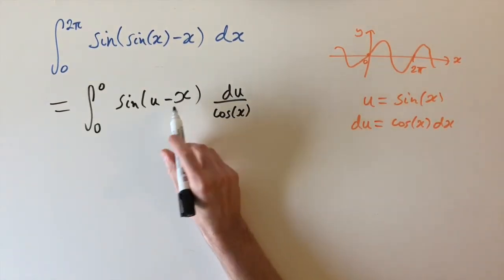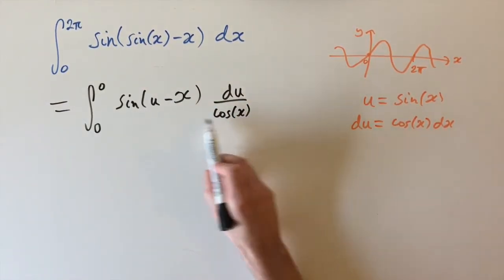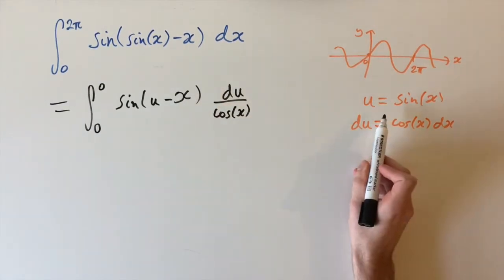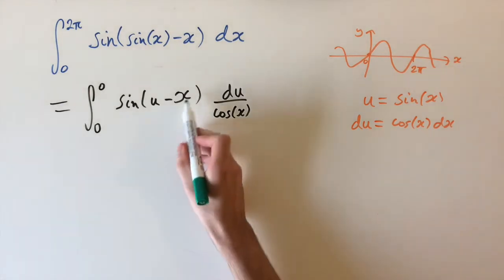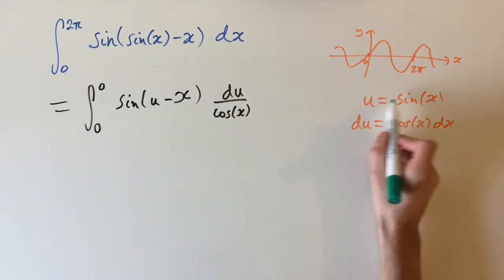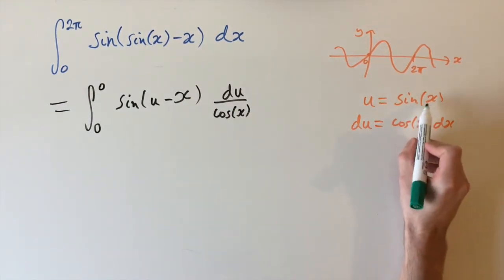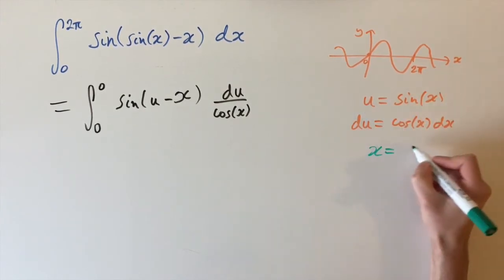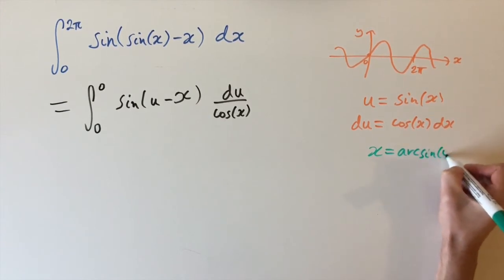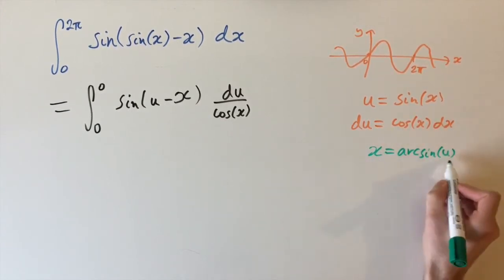So we still have these two factors of x and cos(x). If we can express this in terms of u, then we know that our answer is going to be 0, as we were saying. So to get x in terms of u, we can use this equation here. We know that u = sin(x). And this means that x equals the inverse of sine, which is arcsin. So x = arcsin(u). And this is how we express x in terms of u.